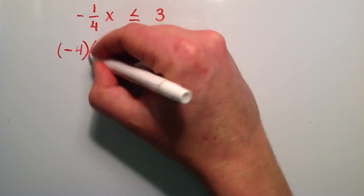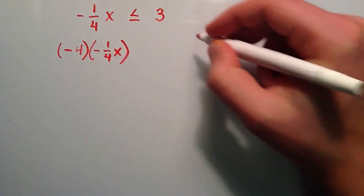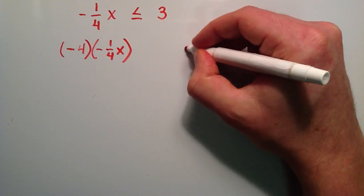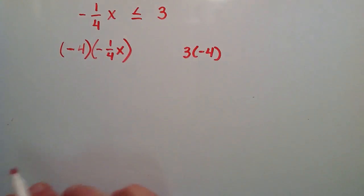So we have a negative 4 times a negative 1 over 4x on the left hand side. And on the right hand side we have 3 times a negative 4. So we just multiplied the left and right hand side by negative 4.